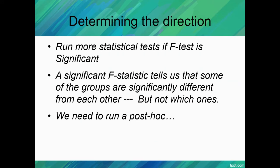So when our F-statistic is significant, we want to run more tests to find out where the difference exists. A significant F-statistic is going to tell us that there's a difference somewhere between the groups, but we just won't know which groups are significantly different from which groups. So we're going to run our post-hoc, whether it be a Tukey post-hoc, or a Scheffe post-hoc, or Bonferroni.